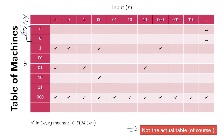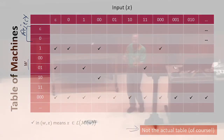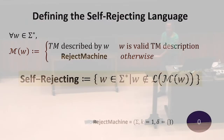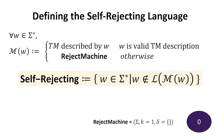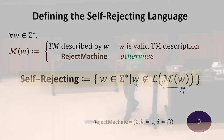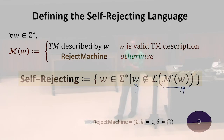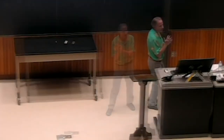So now let's define the self-rejecting language. The self-rejecting language is the set of strings where the language of the Turing machine described by that string does not include itself. That's why it's called self-rejecting — w is the input, we look at that as a string encoding a machine, that machine has a language, and to be in the self-rejecting language, that string should not be in the language that its own machine describes. Probably useful only for proving something, getting some kind of contradiction — unless you're really into rejection.